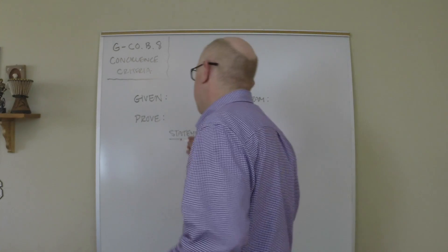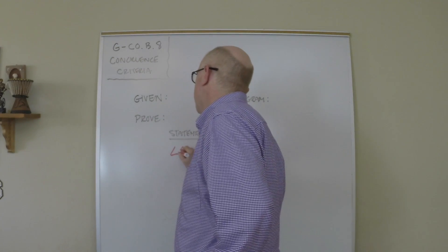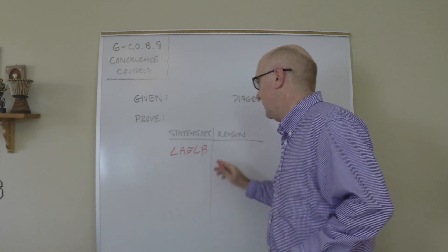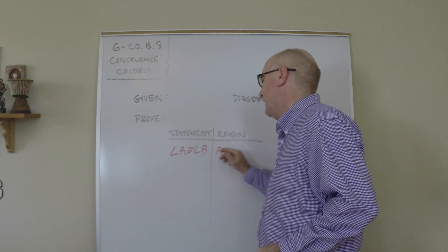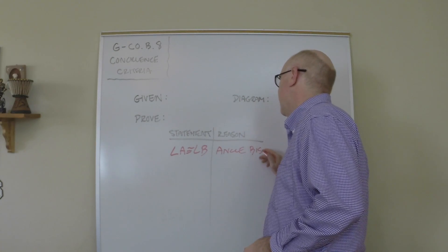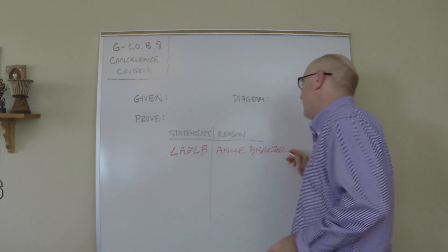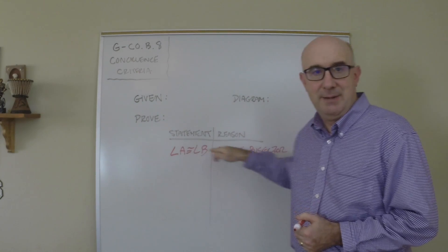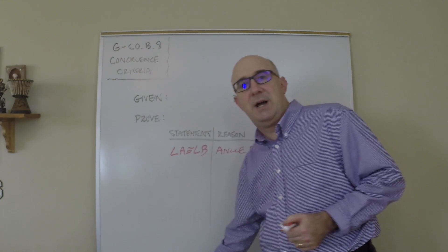And then over here you back it up with your reasons. So you might say angle A is congruent to angle B, and the reason might be because the angle bisector theorem, or I don't know, I'm just making kind of stuff up here, but that idea that I'm going to make a statement and then back it up with a reason why I know that.